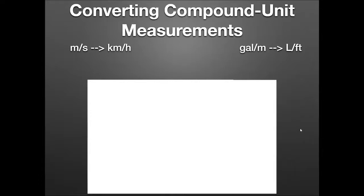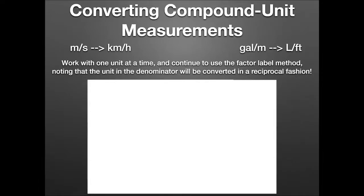So those are single unit conversions. There are these things called compound unit measurements, such as meters per second or kilometers per hour. You're going to work with one unit at a time using the factor label method. However, the unit in the denominator, if I have to convert it such as from seconds to hours, I have to do it upside down, in a reciprocal fashion. Let me show you an example of that.